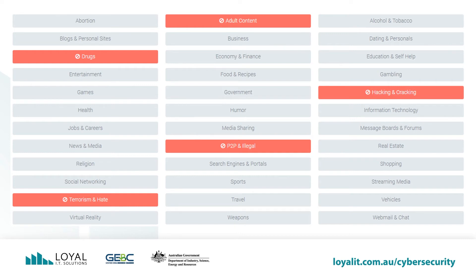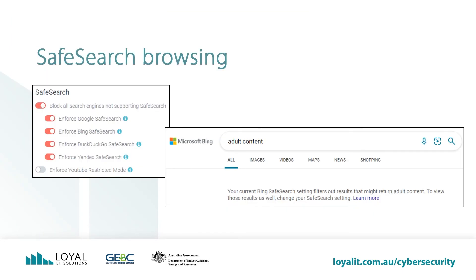Loyal IT's DNS Filter can filter all websites based on their content, categorized across many categories that can be turned on or off based on your business's policies. Some filters include things such as adult content, drugs, hacking, social networking, and terrorism and hate websites. Safe search browsing enables the ability to force safe searching in Google and other search engines — if you search for something that may result in offensive content, it will be blocked to the point where you can't even search for it.